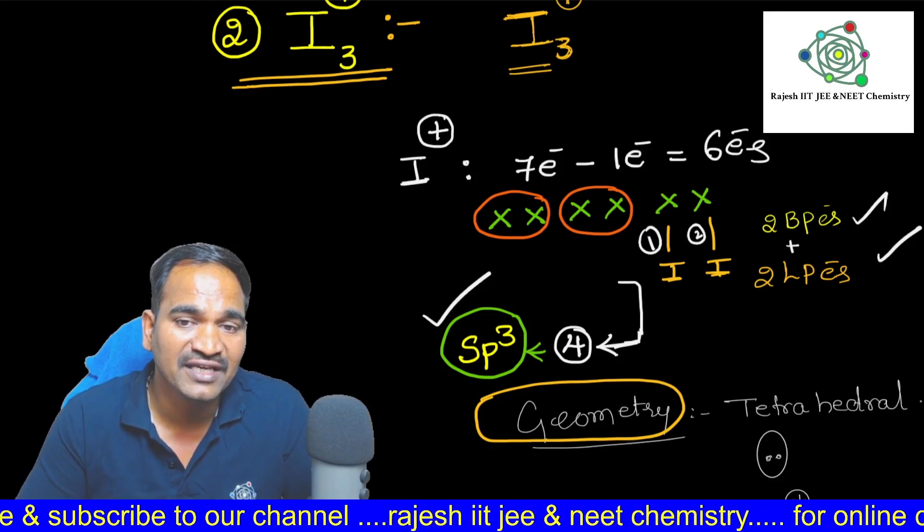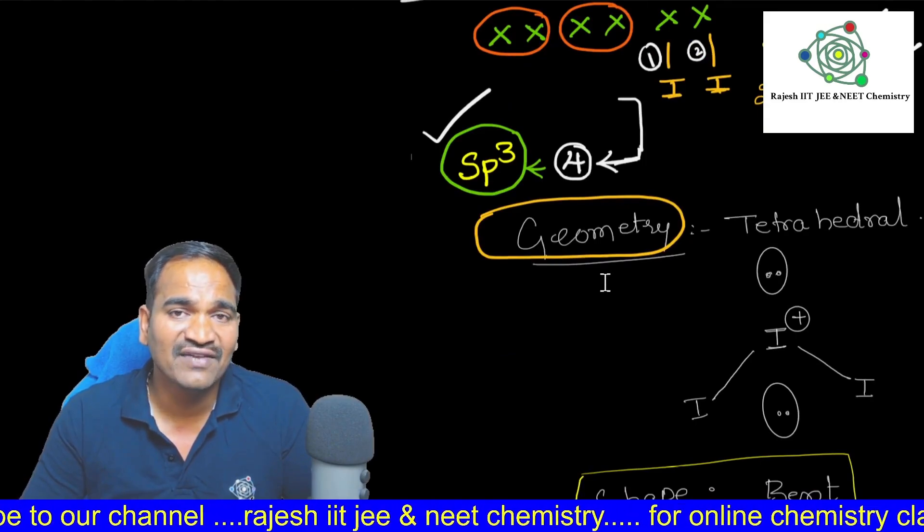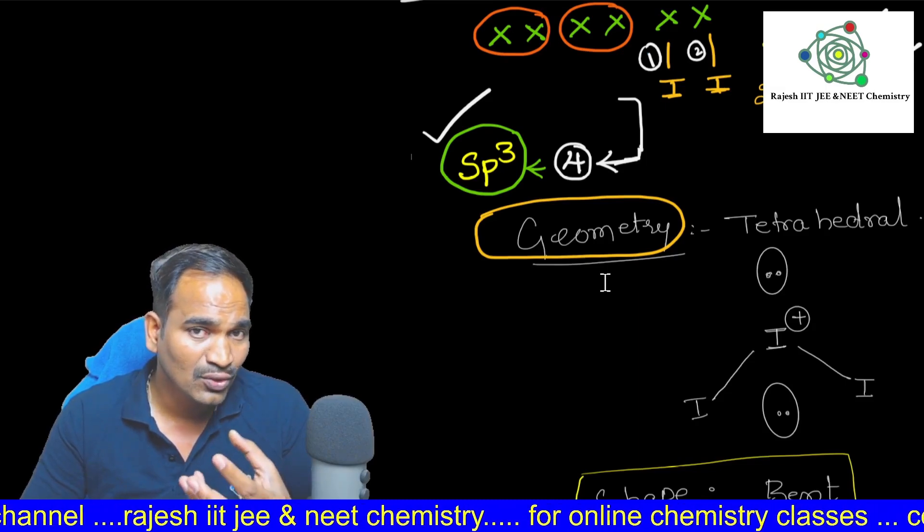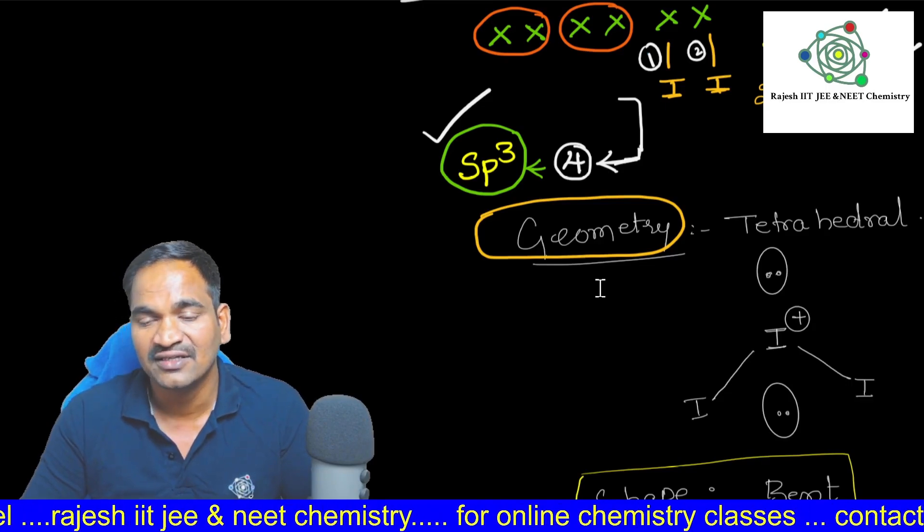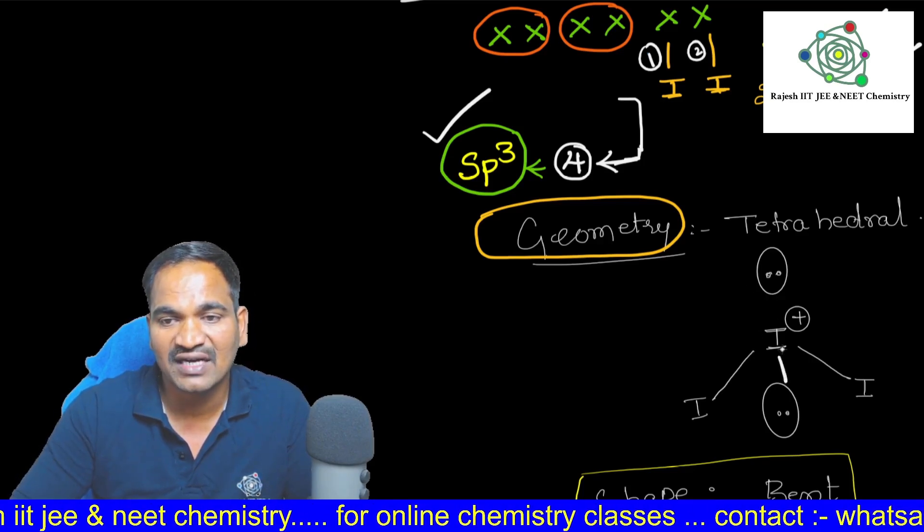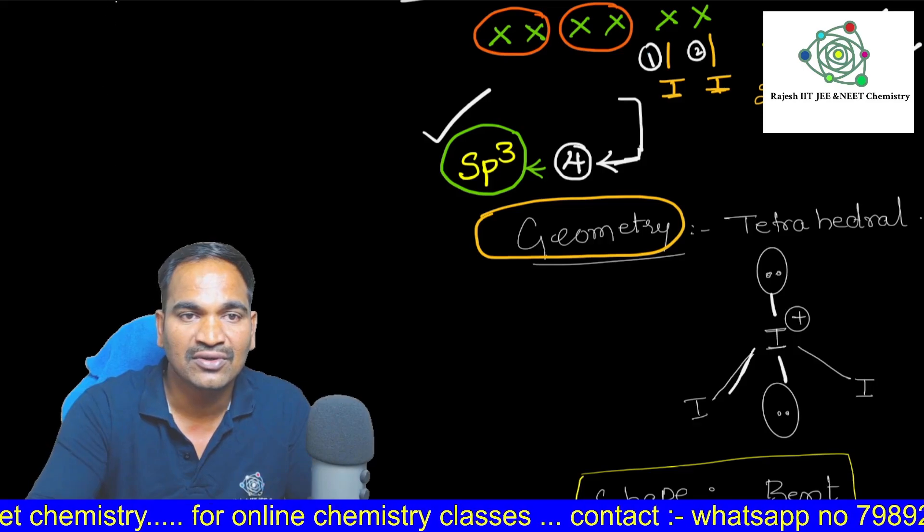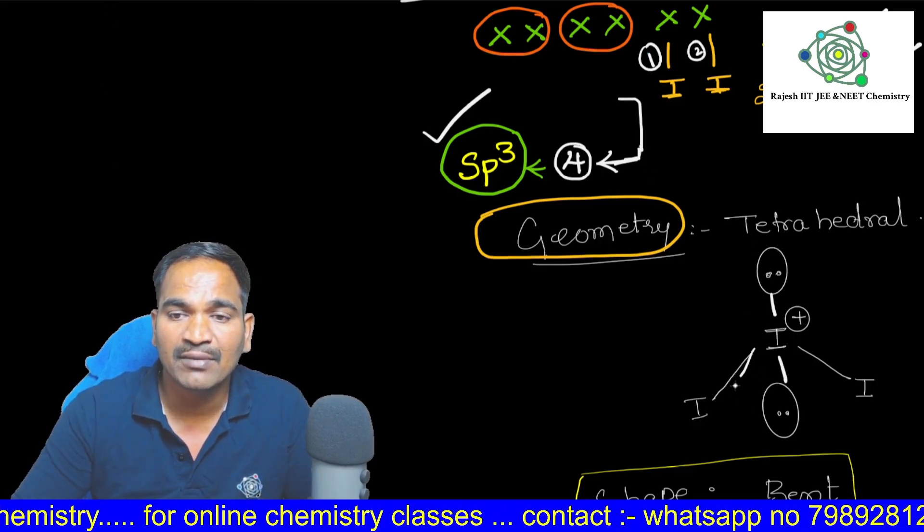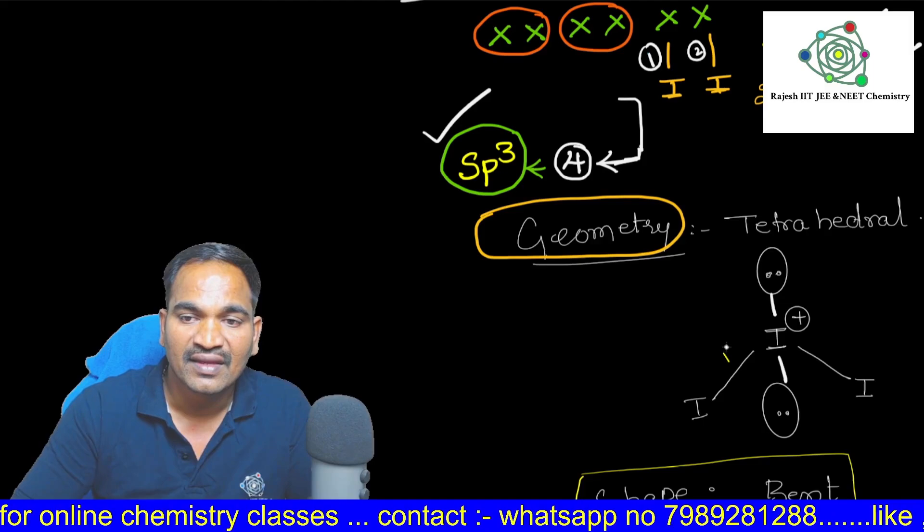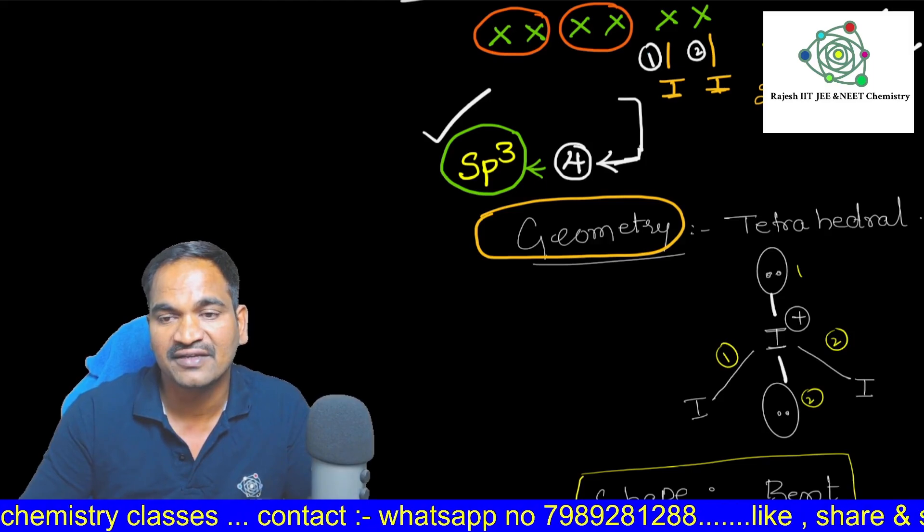Now coming into the geometry of the I3 plus. Geometry, if you take, I already told you, we need to consider lone pairs and bond pairs. Both we have to consider. If you consider the lone pair and bond pair, you can see this. Here this is 1 and this is 1. And here lone pairs 2, bond pairs 2. If you take bond pairs, here 1, this is 1 bond pair, and this is 1 bond pair, 1 lone pair and second lone pair. Total 4.